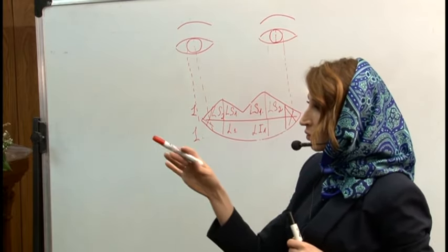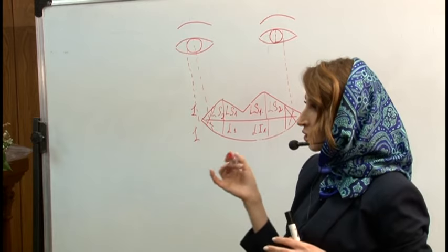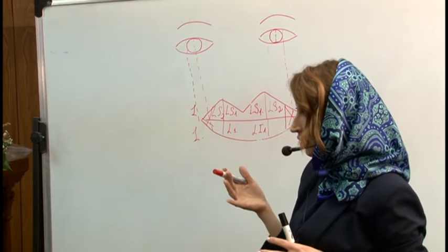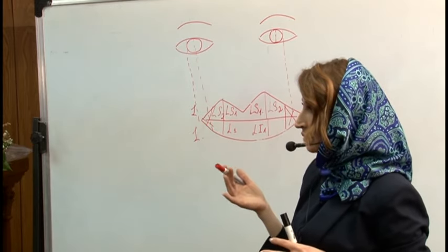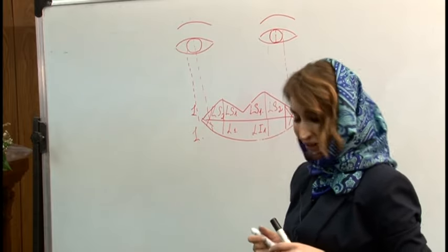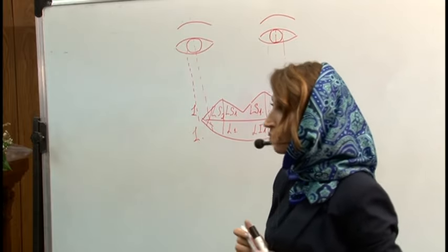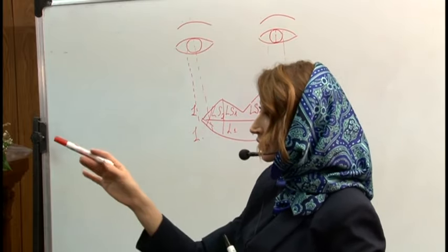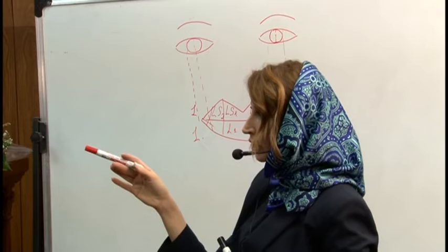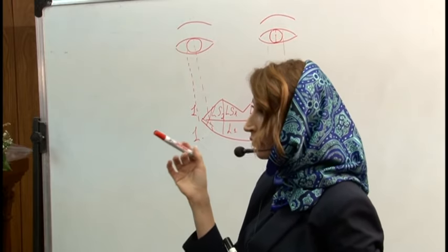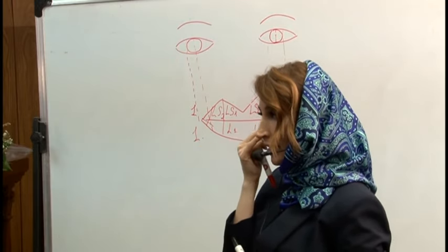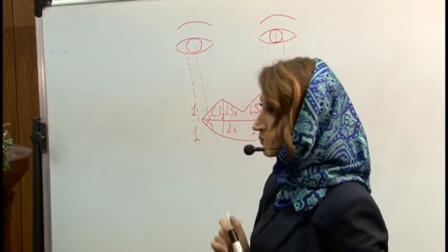What muscles are involved in the gingival smile? It is the zygomaticus, orbicularis oris, and meriformis — which is near the piriform area. This is like Natalia, the famous Russian supermodel who lives in Paris. These are the muscles that have participation in the gingival smile.